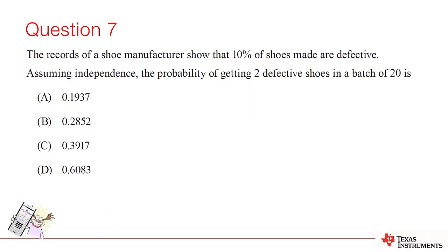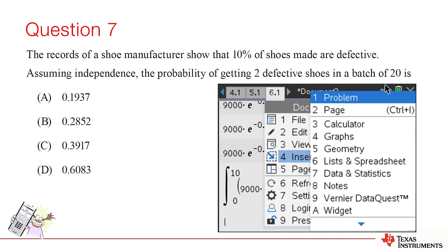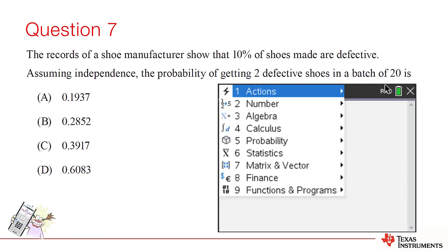Question 7. This is a straightforward application of the binomial distribution. Shoes are either defective or not defective. Successive events are independent.